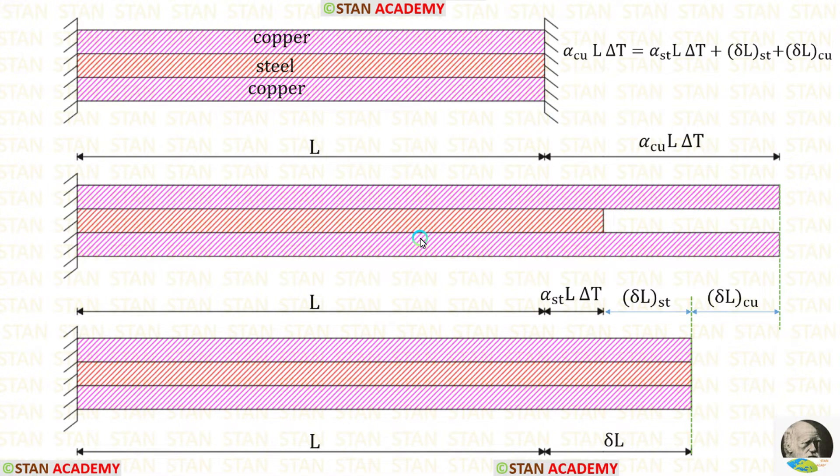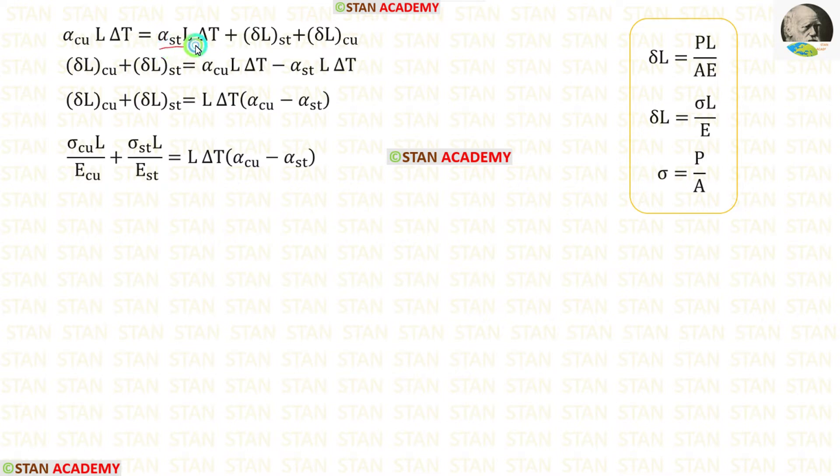Now let us make an expression. Alpha Cu L delta T is equal to alpha St L delta T plus delta L St plus delta L Cu. We can take alpha St L delta T on the other side. It will come as negative. L and delta T are common. We can take them outside. We know the formula for the change in length PL upon AE. We know that the stress sigma is equal to P upon A. So for P upon A, we can apply sigma. Using this formula, we can rewrite these two terms.